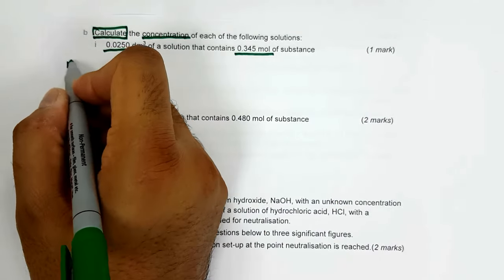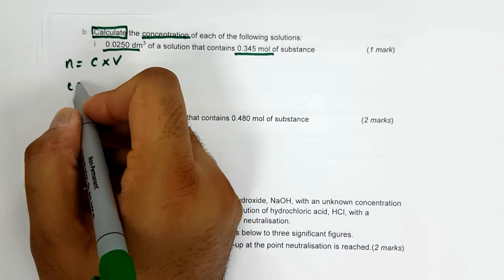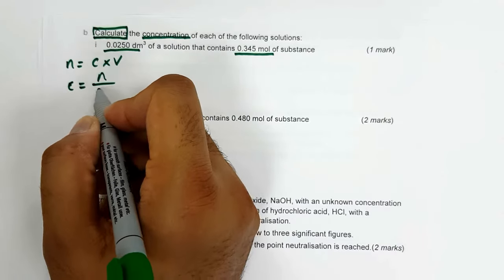The formula is n equals cv. However, this time we are working out concentration, which means we can rearrange to make c equals n over v.